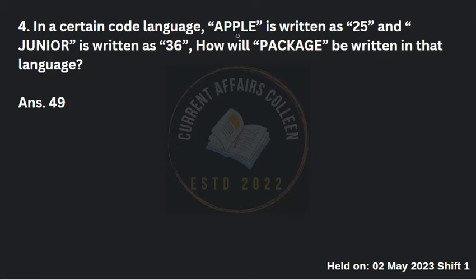Fourth question: in a certain code language, Apple is written as 25 and Junior is written as 36. Apple has 5 letters and 5 squared is 25. Junior has 6 letters and 6 squared is 36. So the pattern is the square of the number of letters. Package has 7 letters, so 7 squared is 49. The answer is 49.